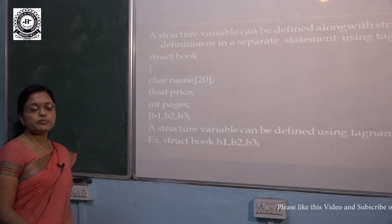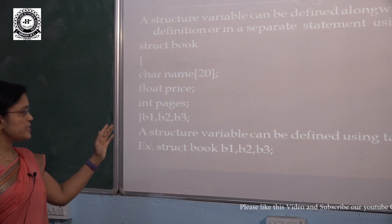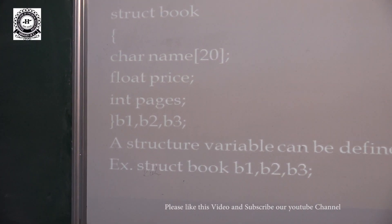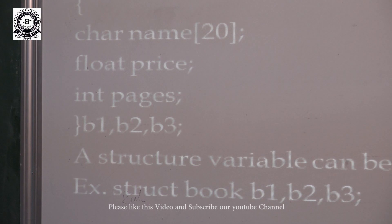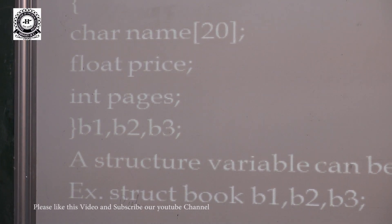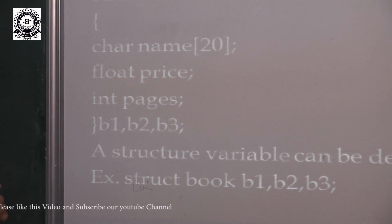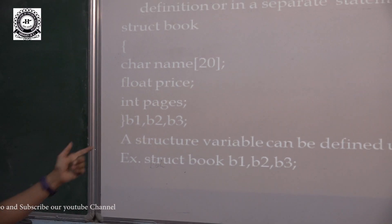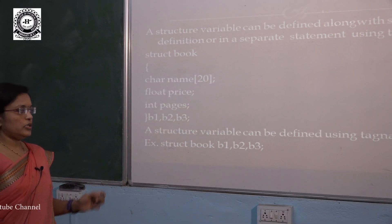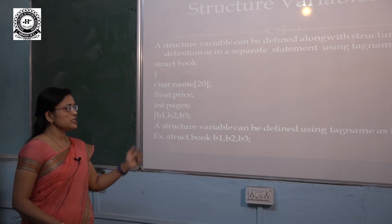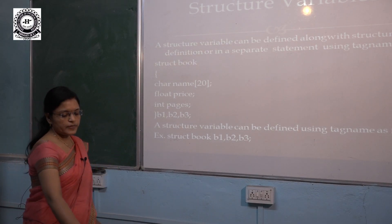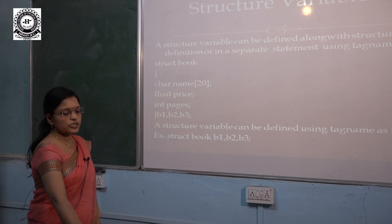If we want to declare multiple structure variables, then separate them with commas. A structure variable can also be defined using the tag name in a separate statement: using the keyword struct, then the tag name — for this example, we use the tag 'book' — and then declare separate variables, for example b1, b2, and b3. In this way we can define structure variables.